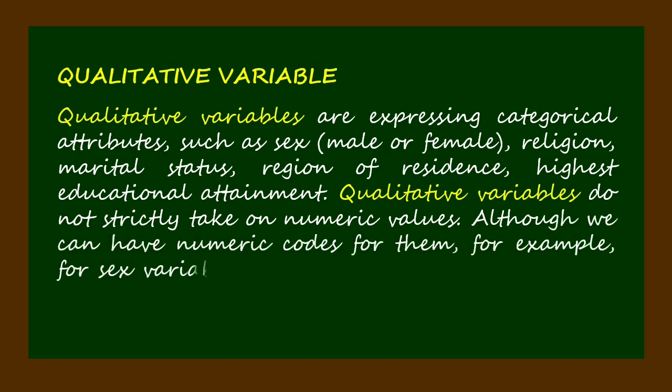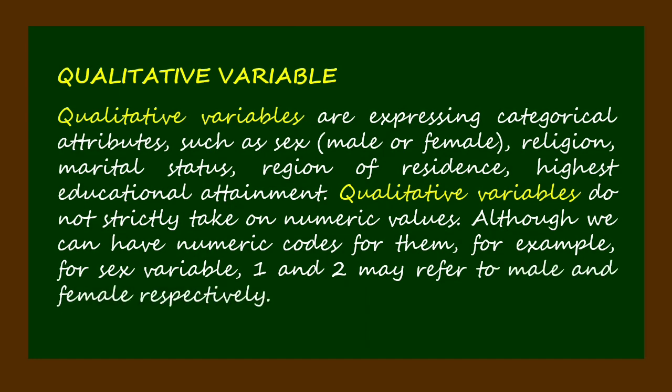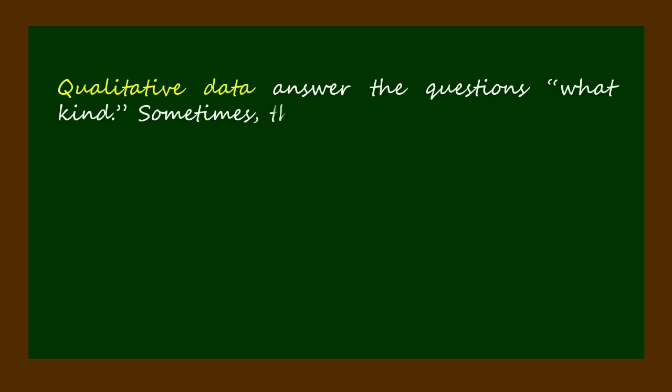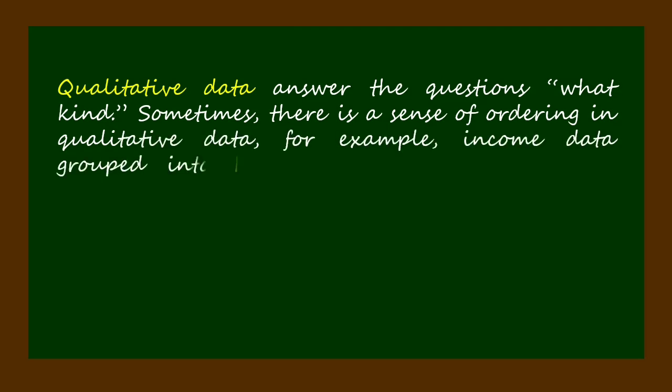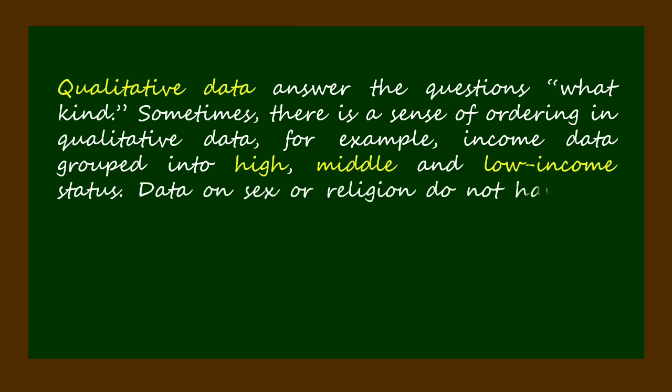Qualitative data answer the question 'what kind.' Sometimes there is a sense of ordering in qualitative data, for example income data grouped into high, middle, and low income status.